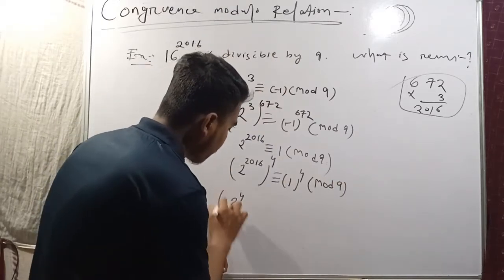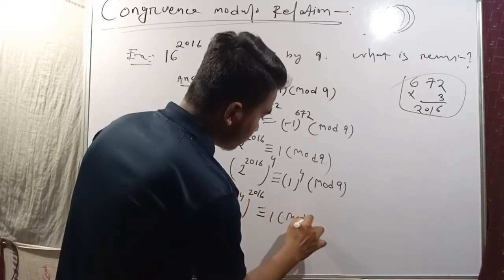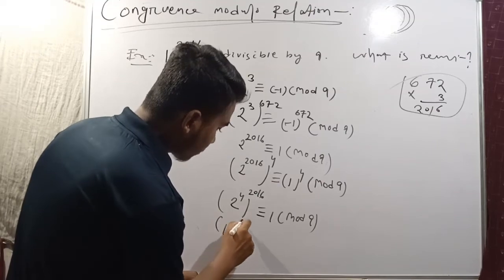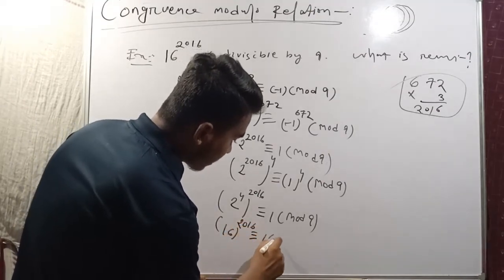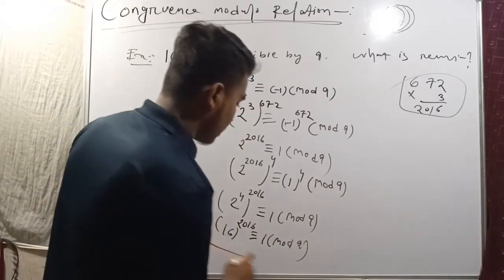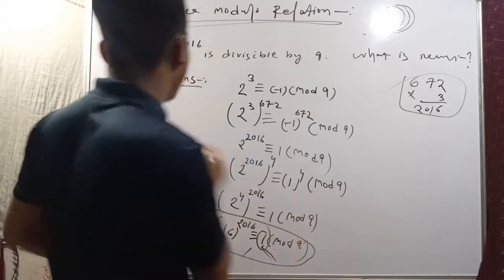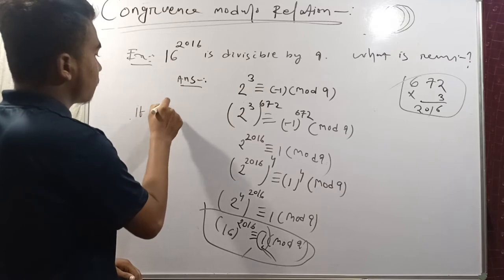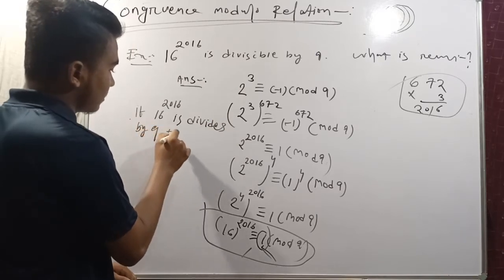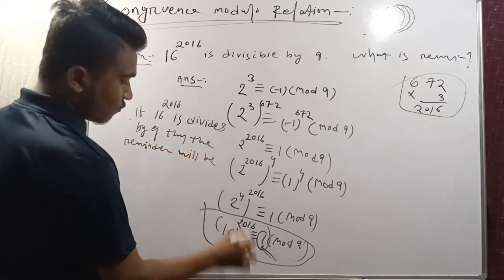Congruent to one: to the power four is equal to one. It's mod 9, equal to two. Three to the power four, to the power four of 16 — 16 to the power two with the solo, it's congruent to one mod 9. Every congruence from the last, a reminder pattern — the reminder is one. Hence, if 16 to the power 2016 is divided by 9, then the remainder will be 1.